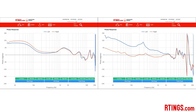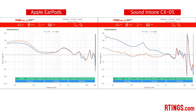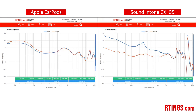Here in the headphone lab, let's take a look at a couple of phase mismatch examples. We have two graphs: on the left is the phase response of the Apple EarPods and on the right is the Sound Intone CX05. The left and right phase responses of the EarPods are really close to each other throughout the range. The phase mismatch on the CX05 is mostly happening in the bass range and mid-range, which is going to make the bass and vocals and lead instruments really weak sounding and as if they're coming from the sides, while the higher frequency treble stuff will remain intact.